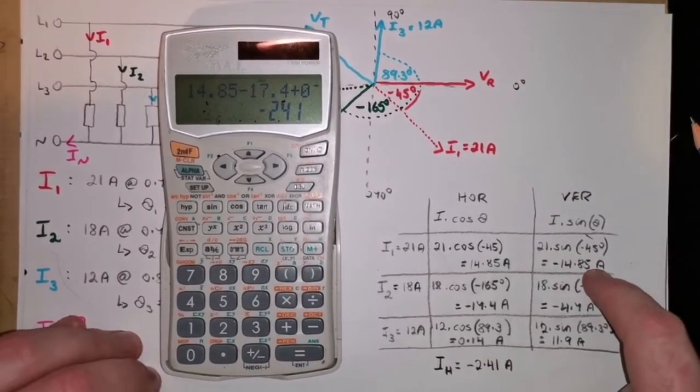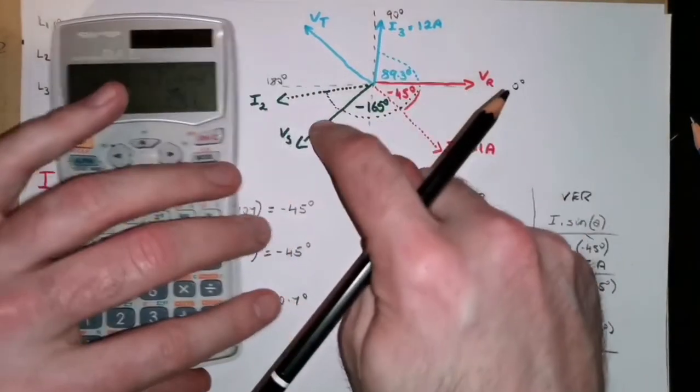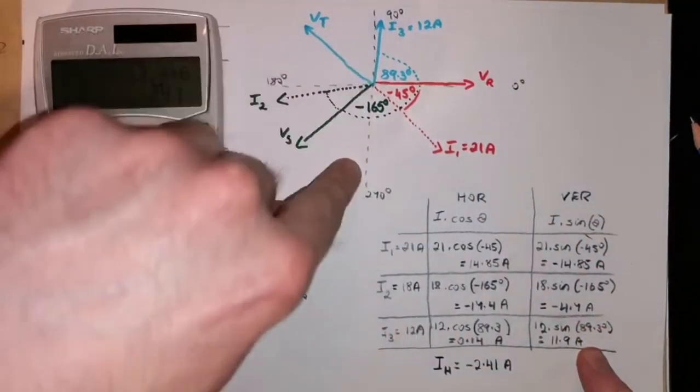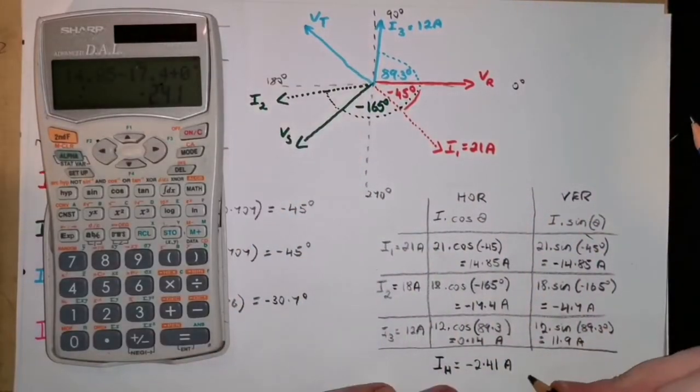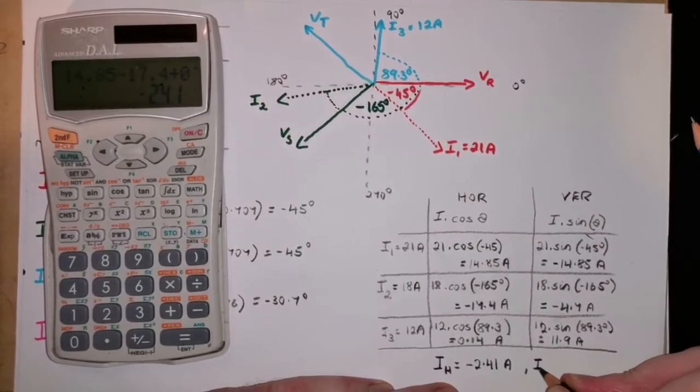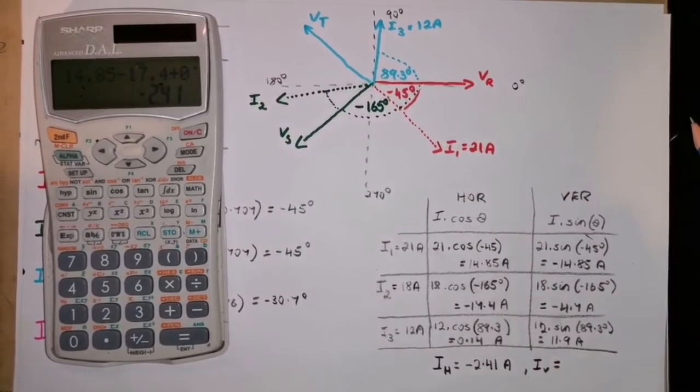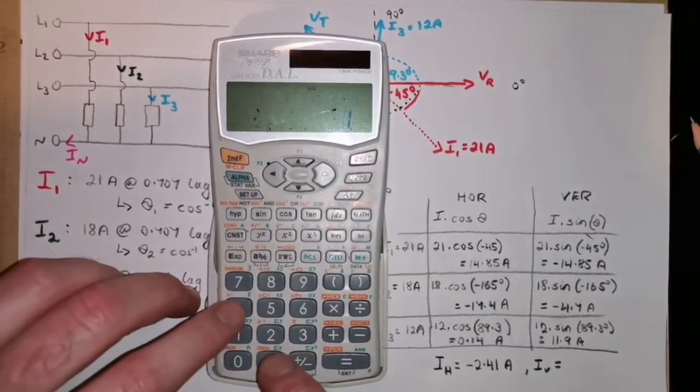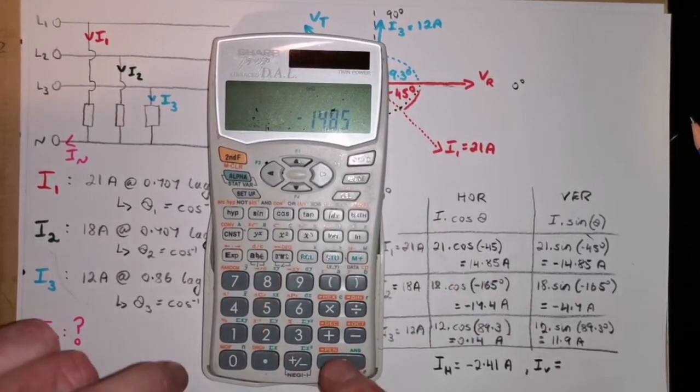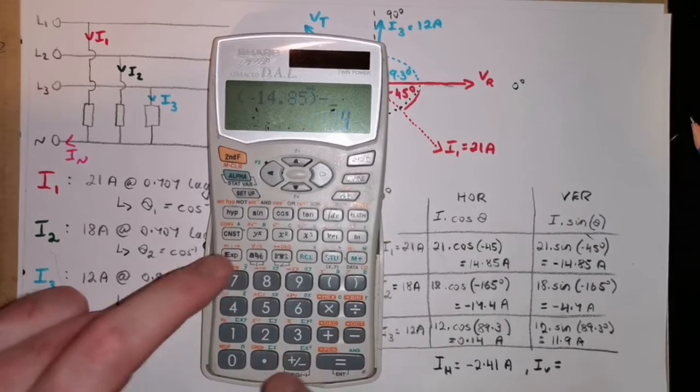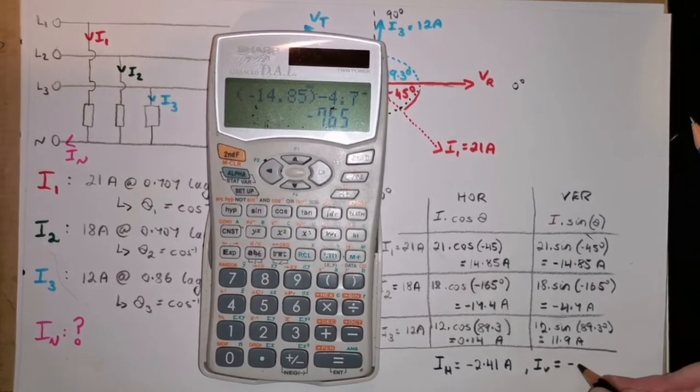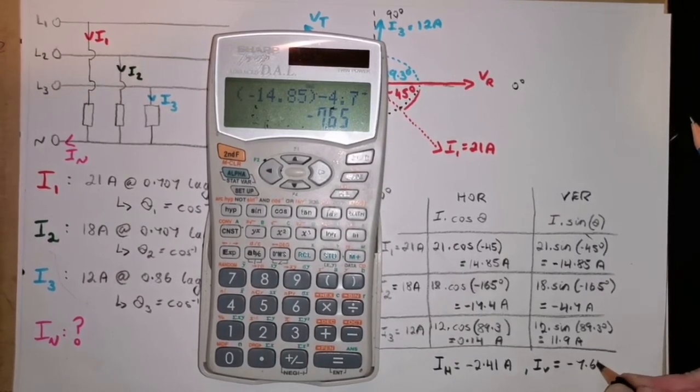And, the same thing here. We broke down each of these phasors for the currents into their up and down, their vertical parts. So, we can just add each of them up to get the total vertical part. It's, on my end, it's minus 14.85 minus 4.7 plus 11.9. I'm getting minus 7.65.